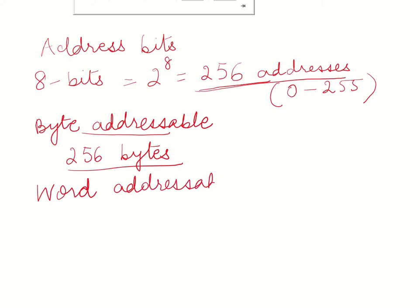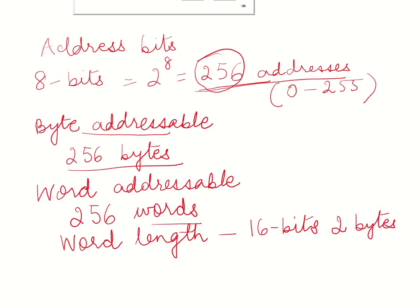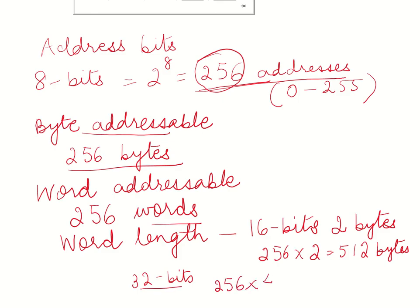What if it is a word addressable memory? If it is word addressable and only 256 addresses are possible, that means I can have 256 words. The size of each word depends upon the word length. So if the word length is 16 bits — for a 16-bit machine, that means 2 bytes — then the size of the memory would be 256 × 2 bytes, which is 512 bytes. If the word length is 32 bits, which is 4 bytes, then I can have 256 × 4, which is 1024 bytes.